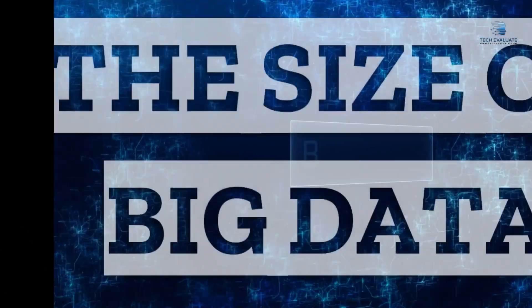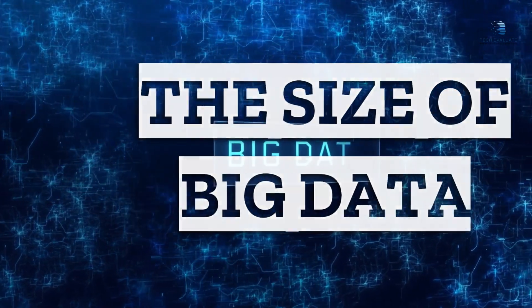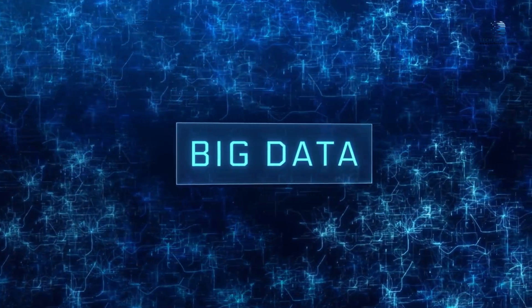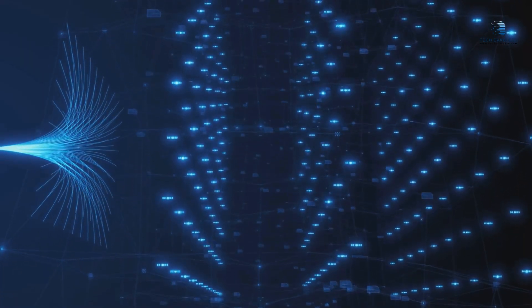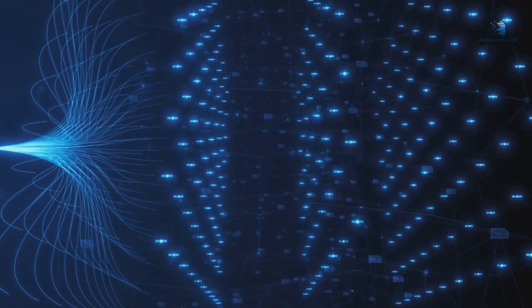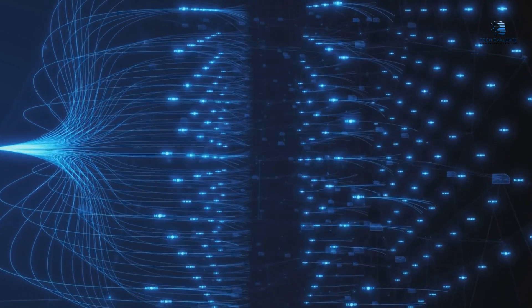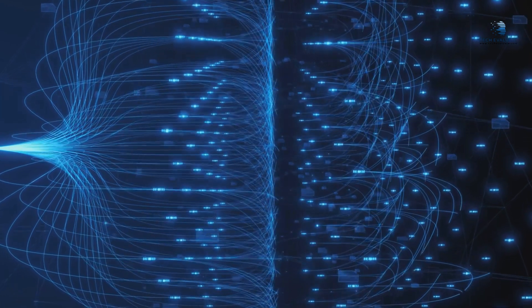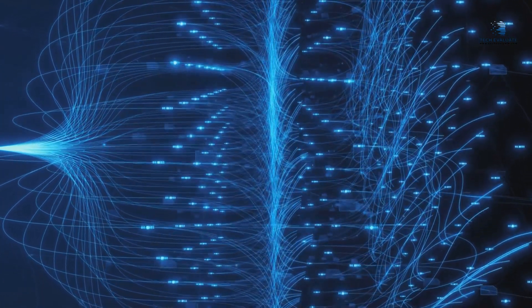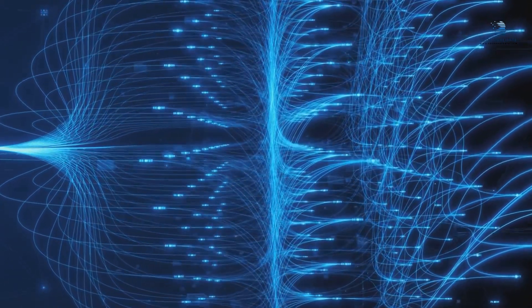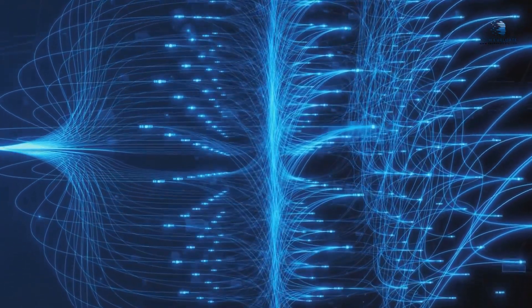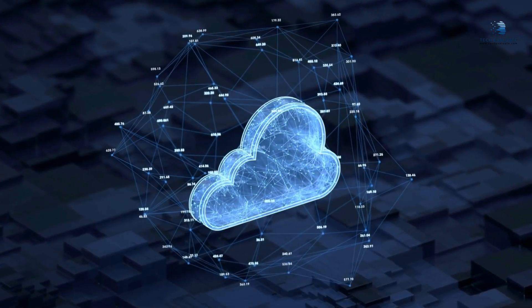The size of big data: according to figures, the so-called digital universe doubles in size every two years. When focusing on big data and its size, Google is processing around 20 petabytes per day of content. One petabyte equals 1024 terabytes, and Google is only one way in which data is processed, so you can imagine just how much data is being processed around the world daily.